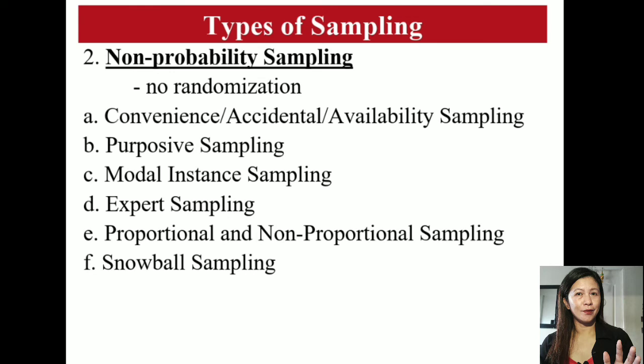Non-probability sampling involves no randomization. Convenience, accidental, or availability sampling considers availability of individuals. In purposive sampling, members of a certain group are purposively sought after. In modal instance sampling, the most common individuals within a defined group are selected. In expert sampling, the most qualified are selected. Proportional and non-proportional sampling selects individuals to meet required proportions. In snowball sampling, if the target population is small, individuals help identify other individuals to expand the sample.